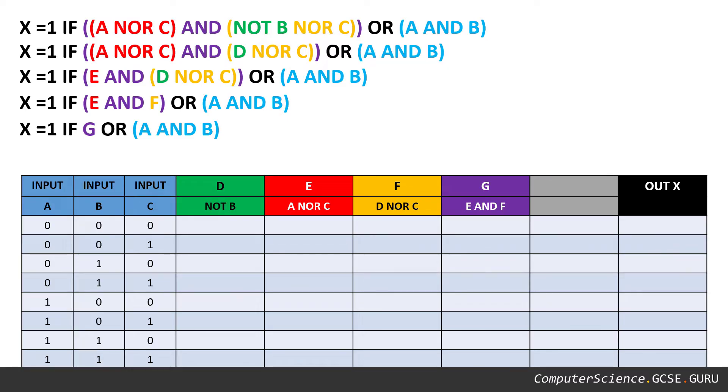So now we're left with G or A and B in brackets. So finally, A and B is a mini problem that needs resolving. So let's bring A and B down into the truth table. We'll call that H. So now we're left with G or H to solve our expression. So let's bring G and H down. G or H down as our output.